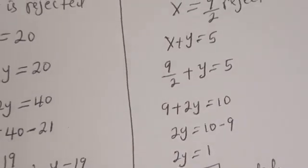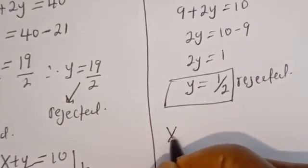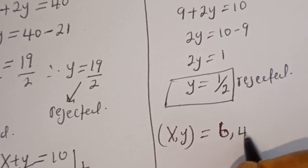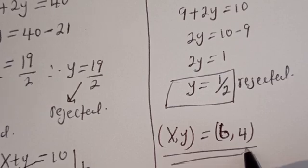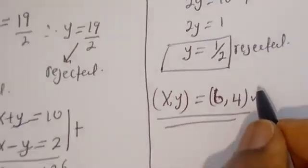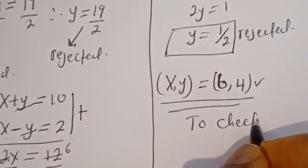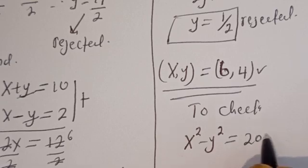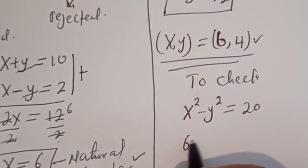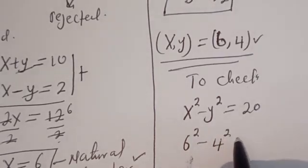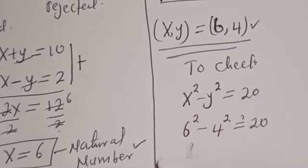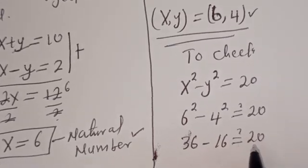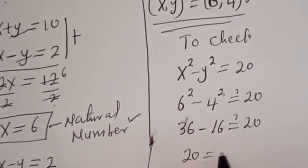Therefore, the only natural number solution we have is (x, y) equal to (6, 4). Let's verify: the given equation is x squared minus y squared equal to 20. Substituting: 6 squared minus 4 squared equals 36 minus 16, which is 20. This equals 20, which is true.